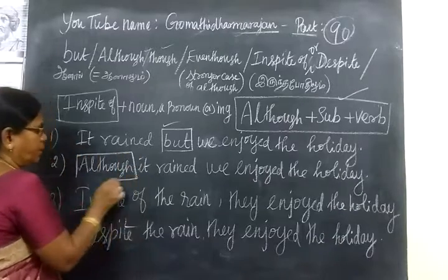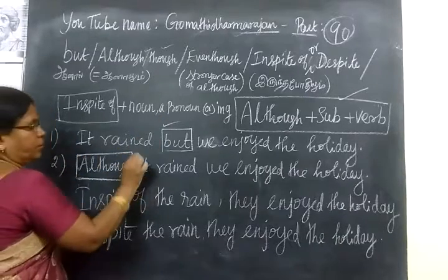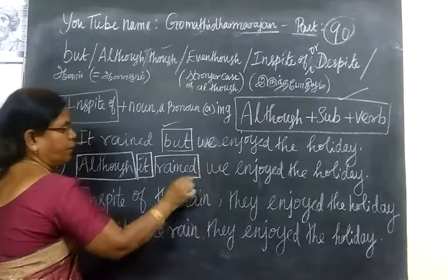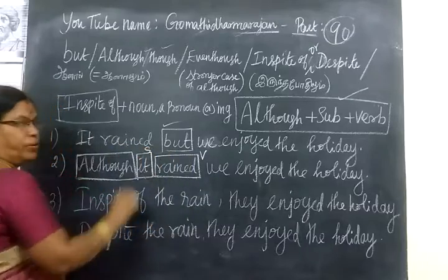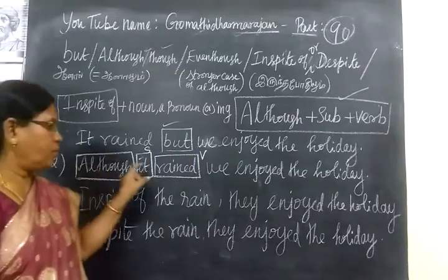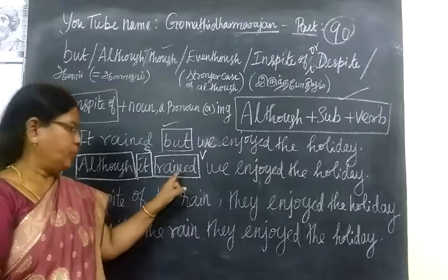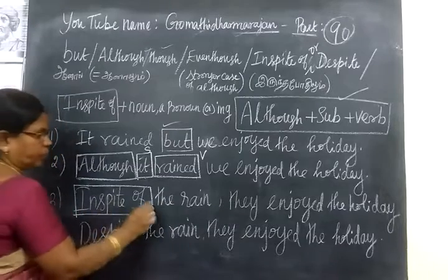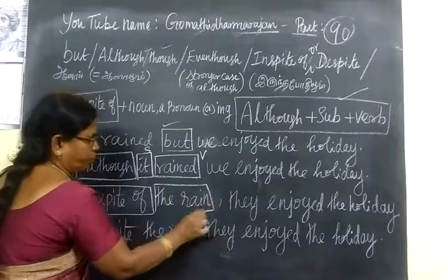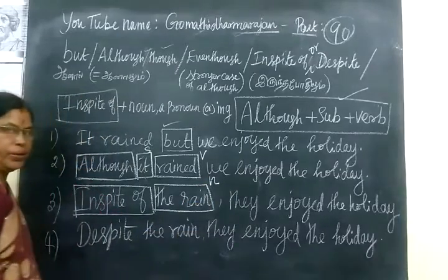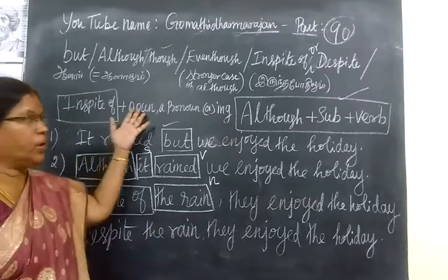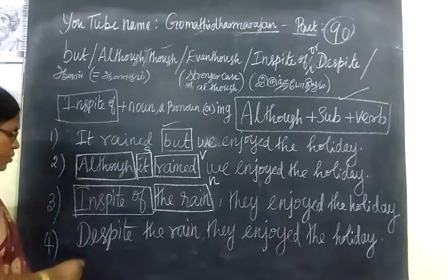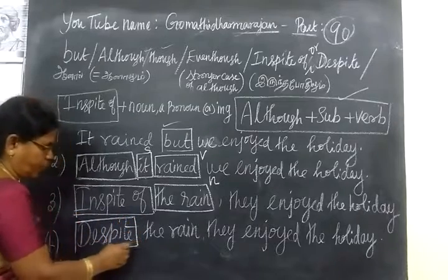Although is followed by a subject and verb. For example, 'it' is the subject and 'rain' is the verb — subject plus verb. Although follows up with subject plus verb. In spite of, on the other hand, is followed by a noun form. For example, 'the rain' is a noun form. So in spite of is followed by a noun form, pronoun, or ING form. Despite is the same as in spite of — both are followed by a noun form.